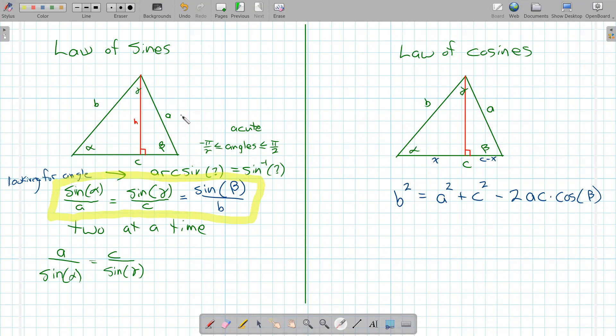And another important thing when we apply these law of sines and law of cosines, the notation is alpha and side A are always opposite each other. Beta angle and side B are opposite each other, and gamma and C are opposite each other.